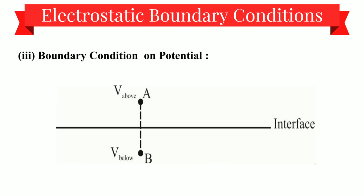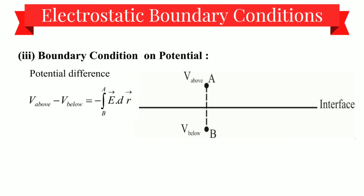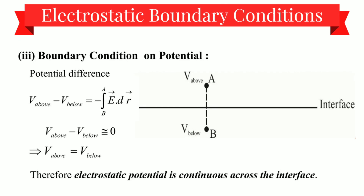Moving to the third part: boundary condition on potential. Consider a segment AB of infinitesimally small length across the interface. V_above is the potential above the interface and V_below is the potential below the interface. The potential difference is written as V_above minus V_below equals minus the integral from B to A of E·dr, which comes from the equation E equals minus del V. As the path length AB tends to zero, its contribution to the line integral can be neglected. So V_above minus V_below equals zero, meaning V_above equals V_below — therefore electrostatic potential is continuous across the interface, and there is no discontinuity in potential in crossing the boundary.